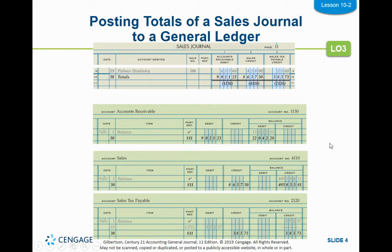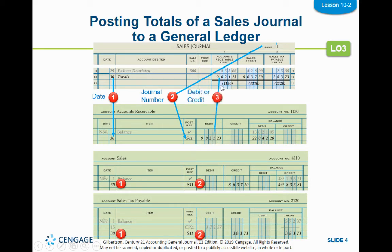Then you're going to post them. Start with your date, then your page number, then do your totals. Accounts receivable debit comes to accounts receivable as a debit — debit balance, debit transaction — add them together for your new balance.